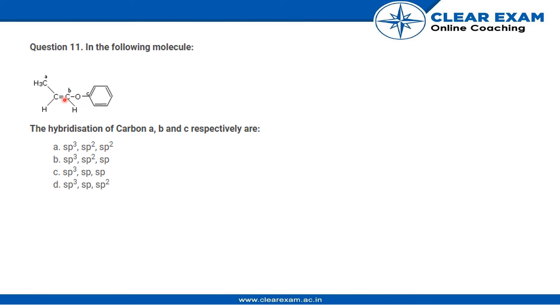Looking at the options, there are only two options, A and B, that have SP2, which represents three hybrid orbitals (S1, P2). Therefore, the hybridization of carbon B is SP2.